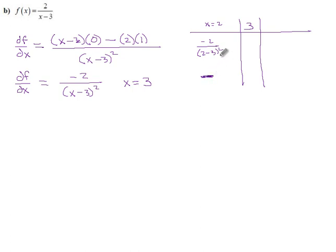The derivative is negative to the left of 3. If we're exactly on 3, we get negative 2 divided by 0 squared, which is undefined.